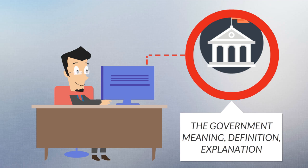The Columbia Encyclopedia defines government as a system of social control under which the right to make laws, and the right to enforce them, is vested in a particular group in society.